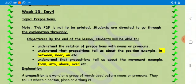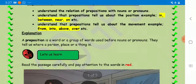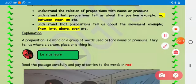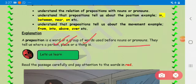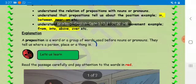We'll learn about the prepositions, how they're used and what do they tell us. A preposition is a word or a group of words used before a noun or a pronoun. They tell us where a person, place or a thing is and also tell us about the movement of a person or a thing.